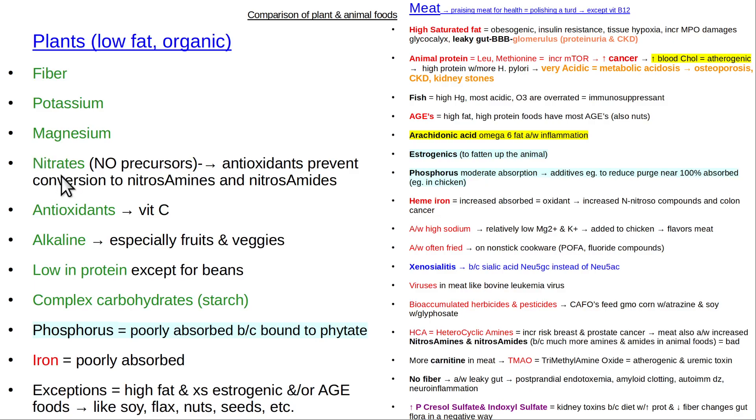Another thing is people say, well, what about nitrates? I heard nitrates were bad. I heard nitrates in meat, you know, processed meat, salami, bacon, and all this stuff increase the risk of cancer. That is true, but it's for a different reason. The nitrates in meat are different. There's more amides and amines that are available to react with them to form nitrosamines, nitrosamides.